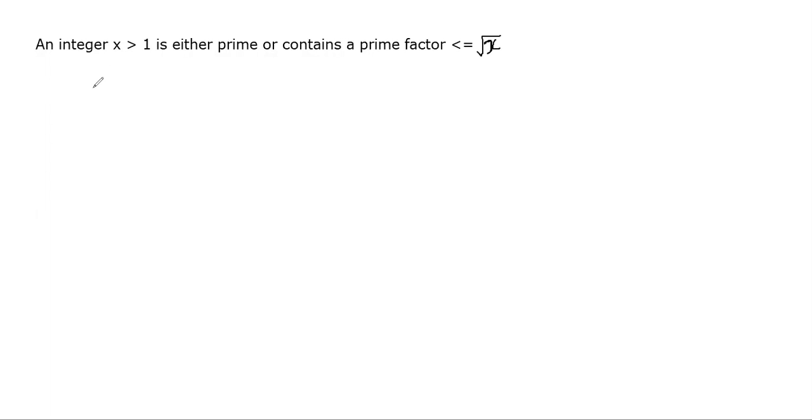Suppose you are given an integer x greater than 1. There are only two possibilities: either the number itself is prime, or it contains a prime factor bounded by square root of x.